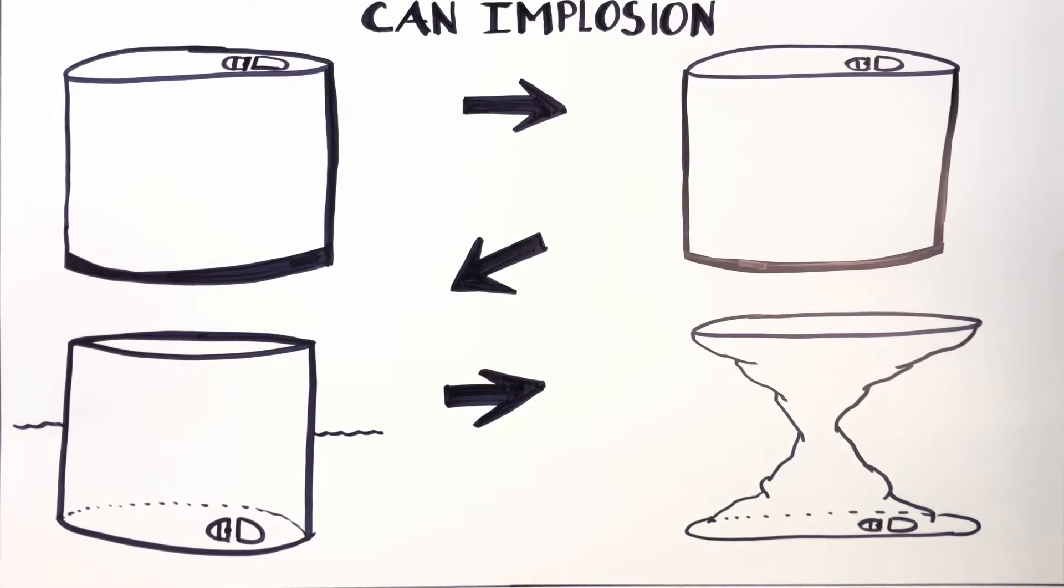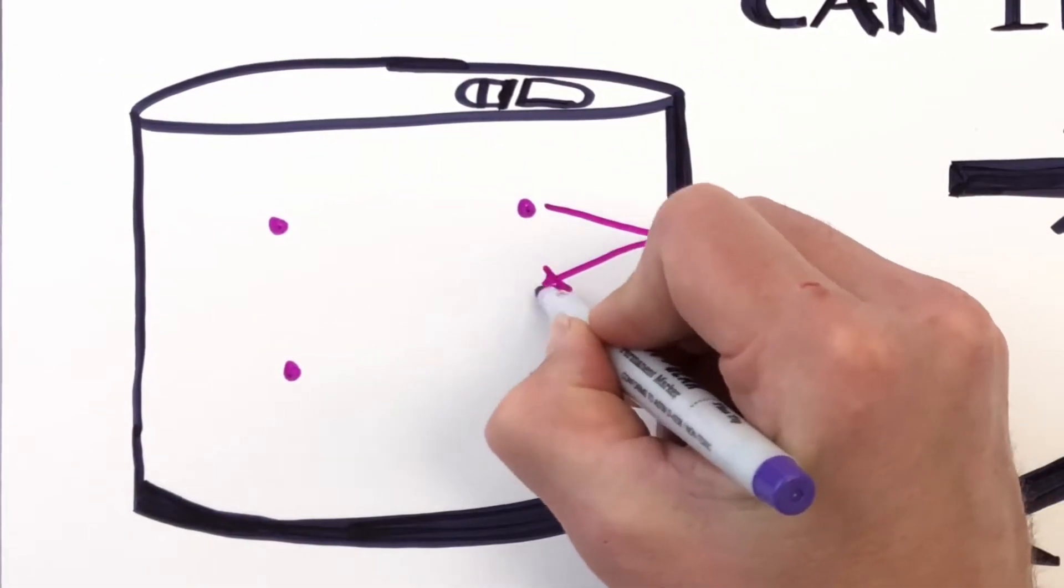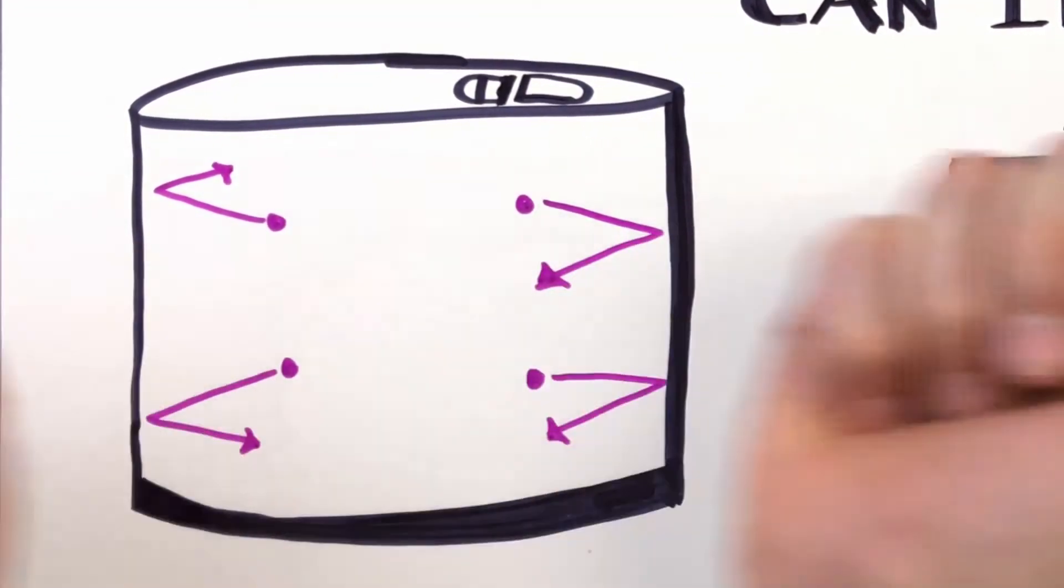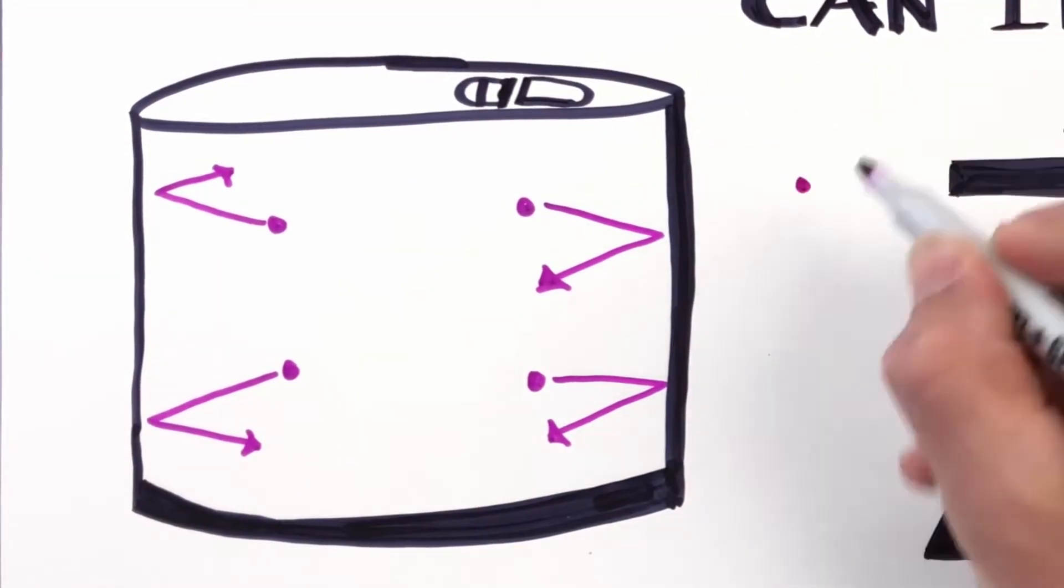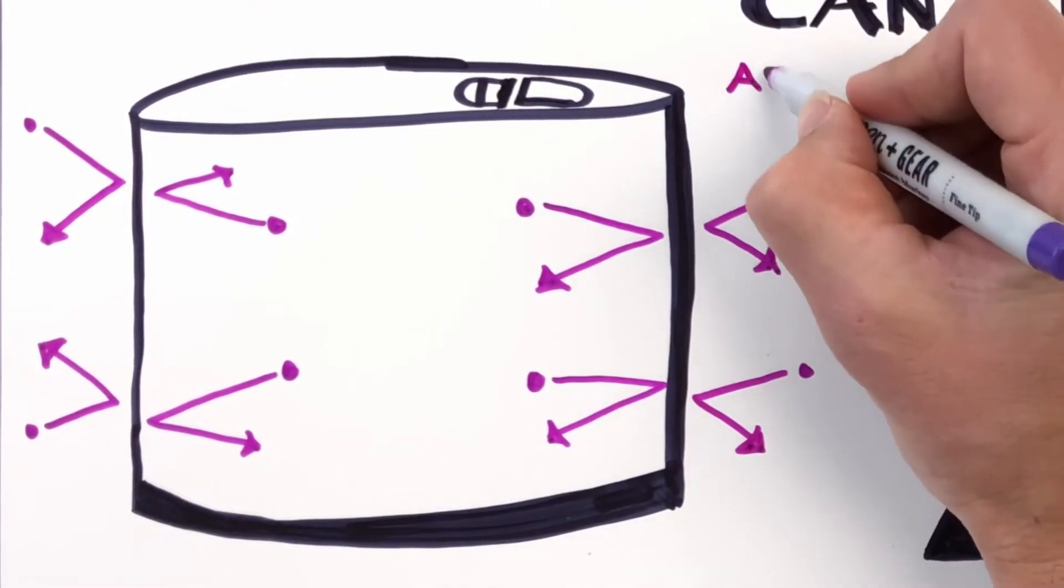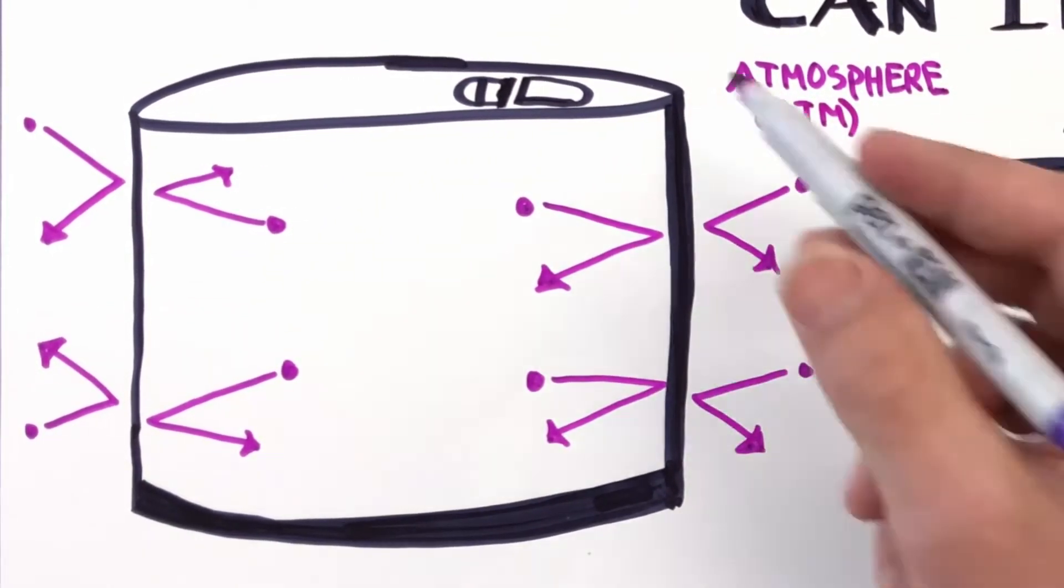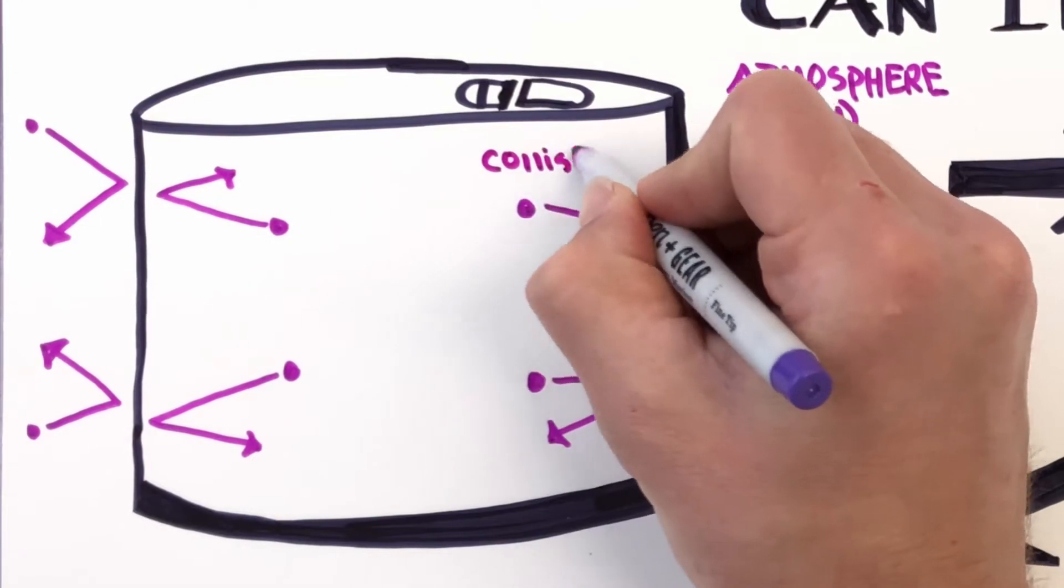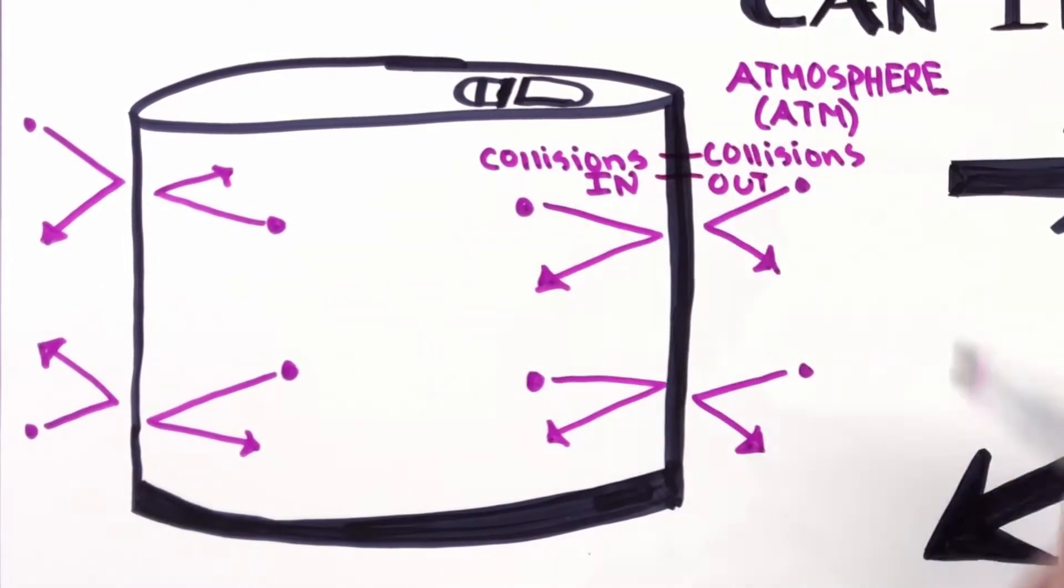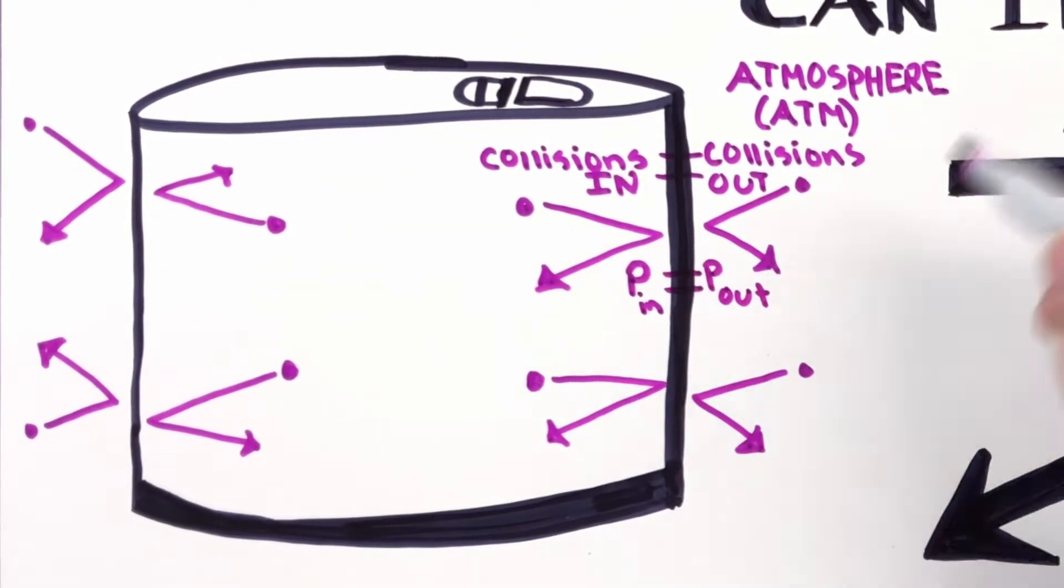So our first way that we're going to look at this is with the can unheated, just sitting on the counter. We have a certain number of gas molecules pushing on the inner wall surfaces, and we have the same number of gas molecules hitting the outer wall surfaces. And those outer ones are coming from the atmosphere, gas molecules in the air all around us. So the collisions on the inside can surfaces are the same as the collisions on the outside can surface. And I'll just note this can is open here. And since the collisions are equal in and out, the pressure's equal.